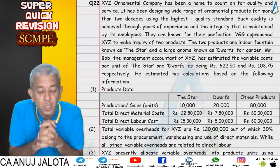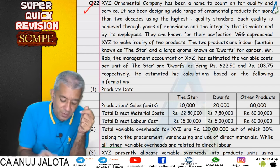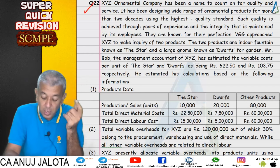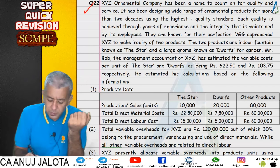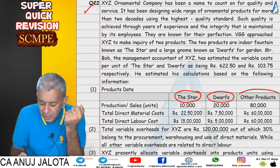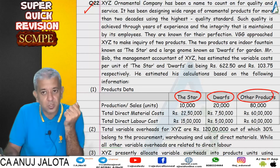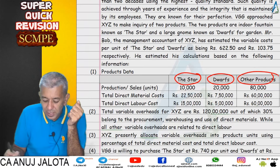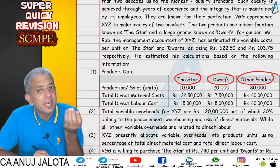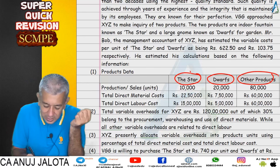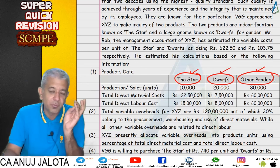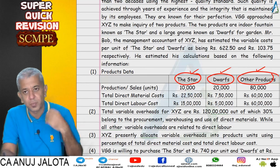Let's start question number 22. This was a question on activity based costing plus activity based management. There were mainly two products, Star and Dwarf, and then other products also. Many people made one mistake in this question — they think that the total of Star and Dwarf equals the overall total, but it's not like that. You have Star, you have Dwarf, and you have other products.